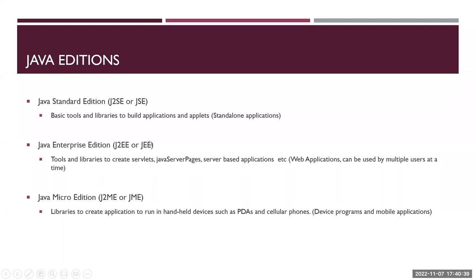The next one is Java EE — Java Enterprise Edition. Most of our applications within the industry, like Facebook, are web applications, meaning you access them via your browser. You go into a browser, key in the URL, and your application opens. The pages you're accessing are called server pages.